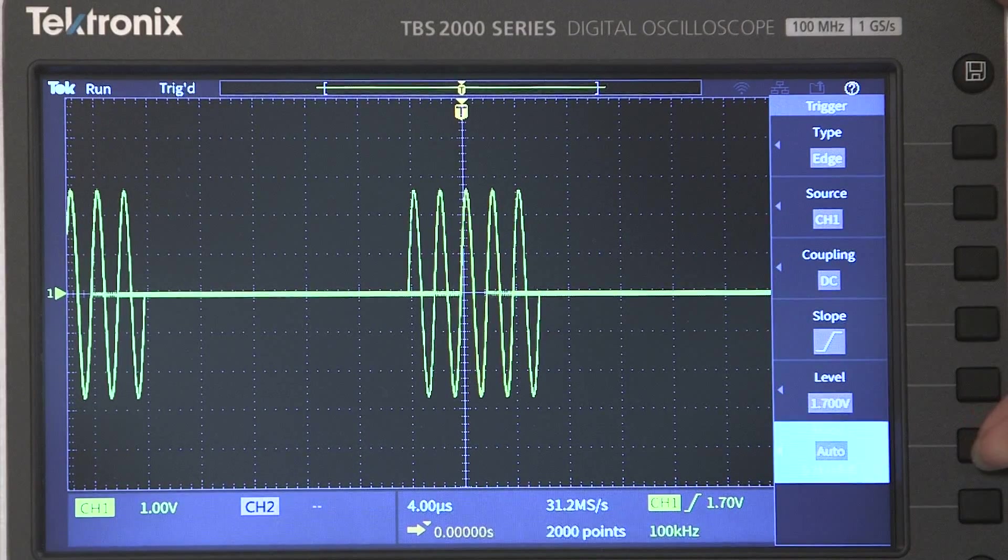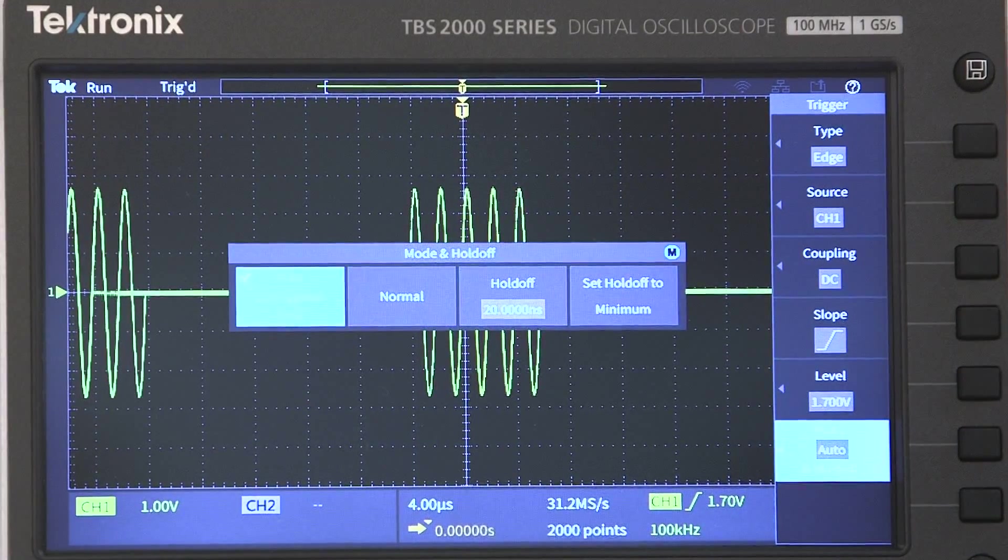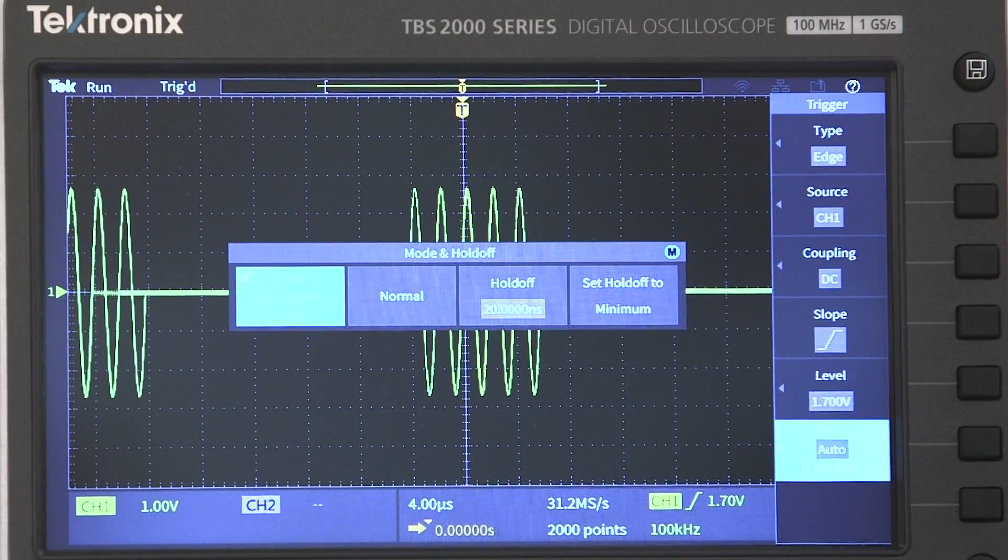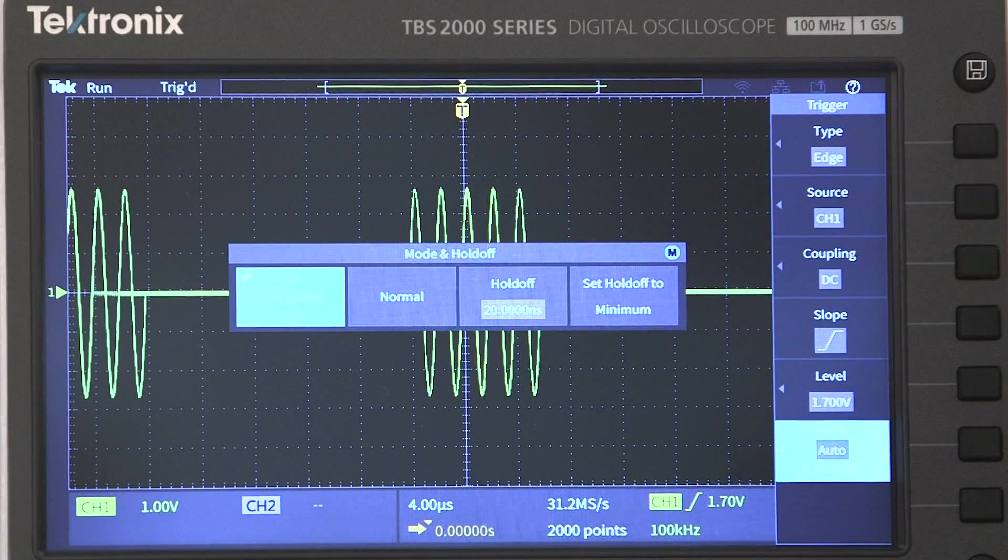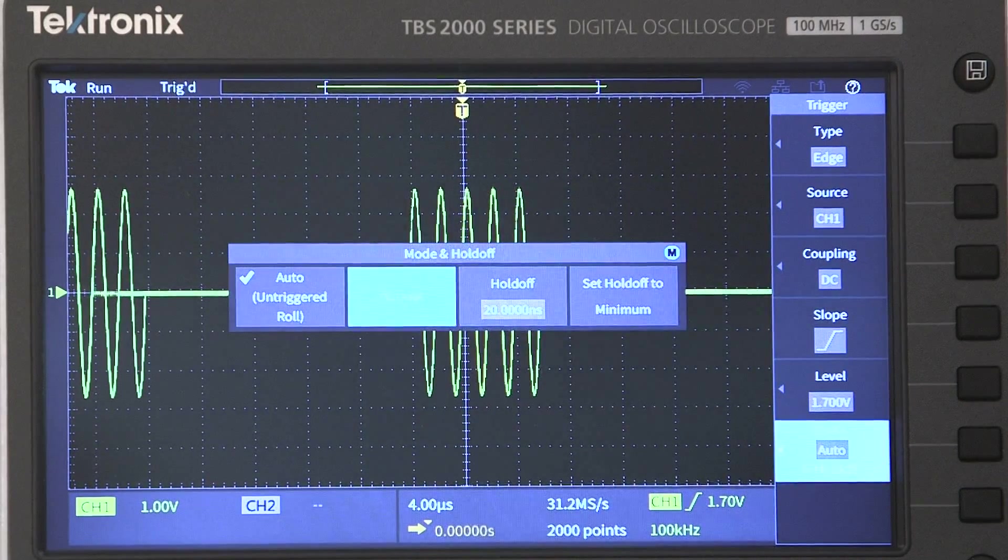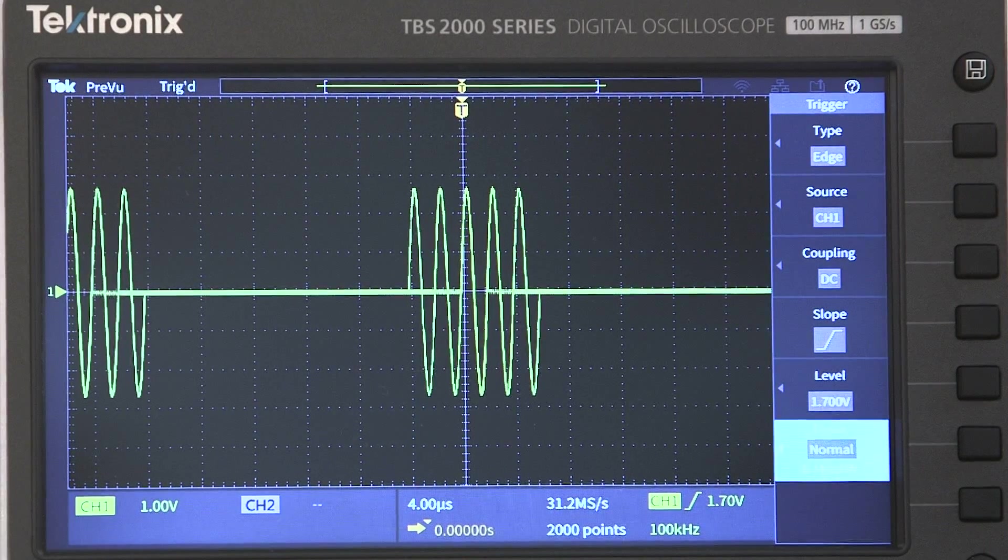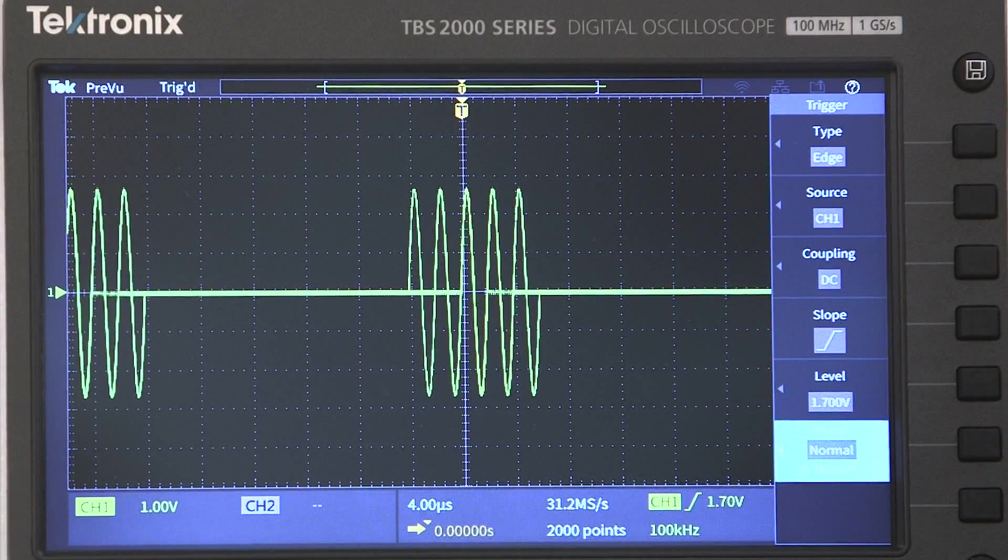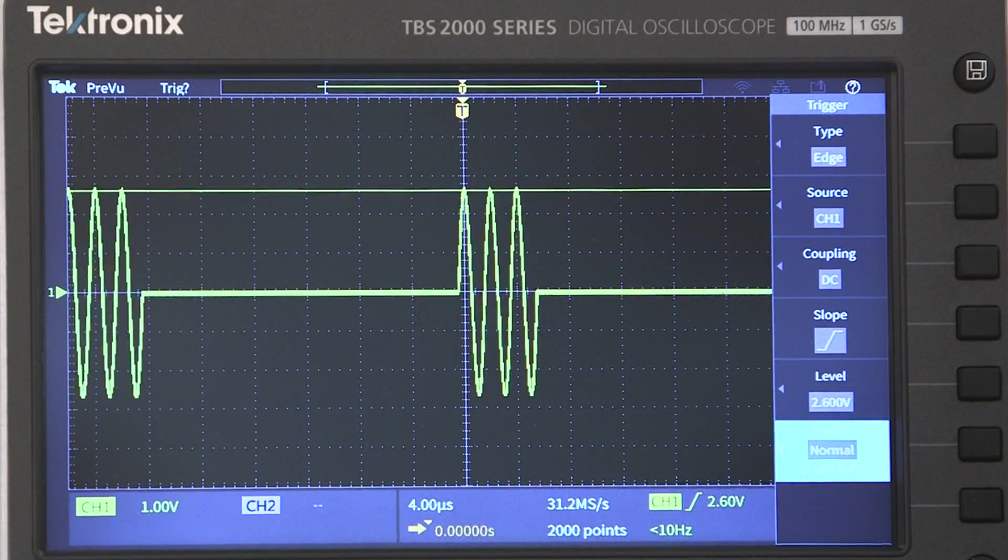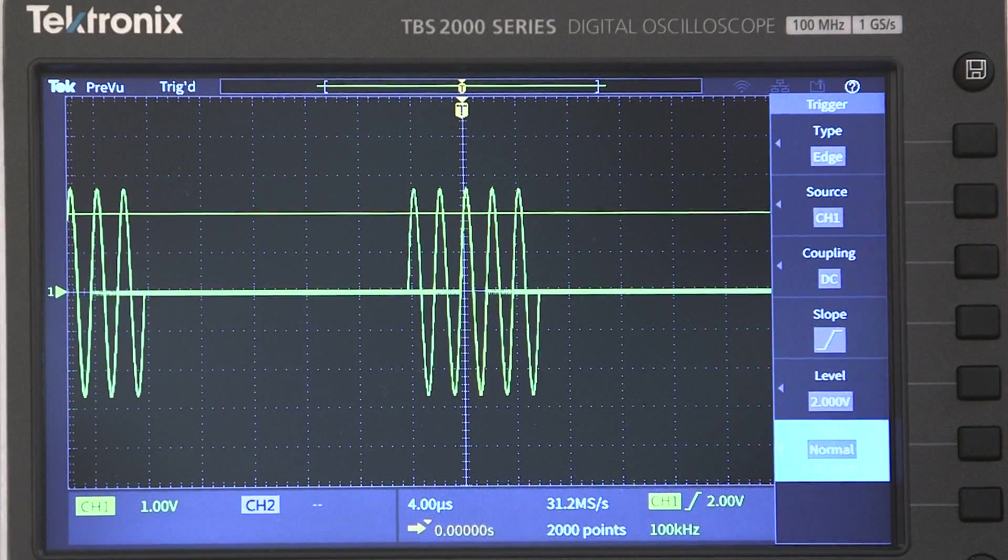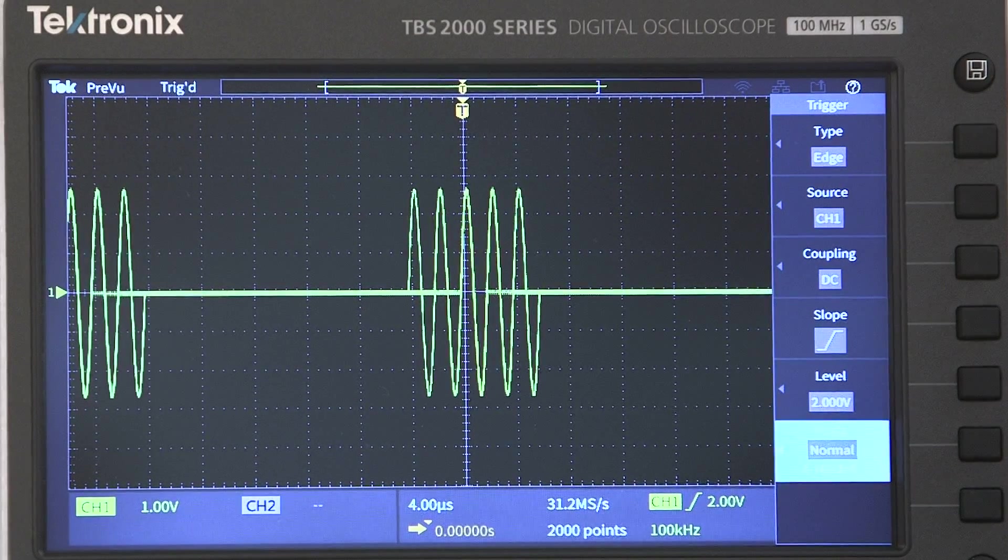The other trigger mode is normal mode. It's a little counterintuitive, but normal mode is not the default setting. When the trigger system is in normal mode, the scope acquires a waveform only when the trigger condition is met. So as you can see, when I lift it, it's no longer triggering. This mode is useful if you're looking for specific conditions that don't occur very often.